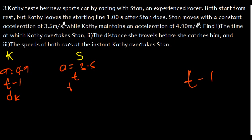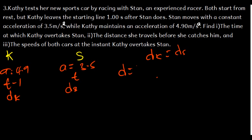D_Kathy = D_Sten. Since both started from rest, the initial velocity term vanishes and we use D = ½aT². The formula that works here is displacement = V_initial × T + ½aT², but since the initial velocity is 0 for both, it reduces to D = ½aT².